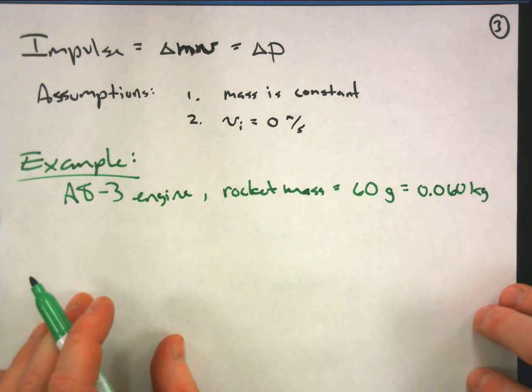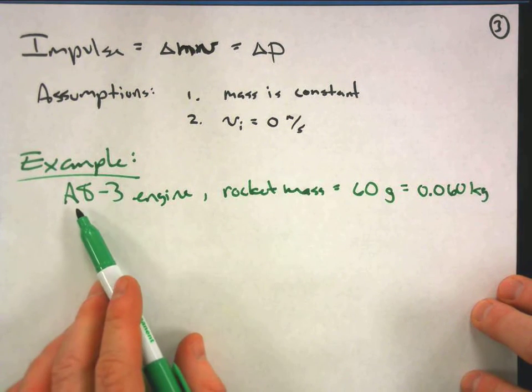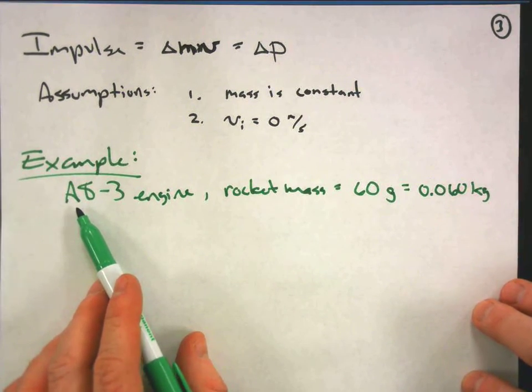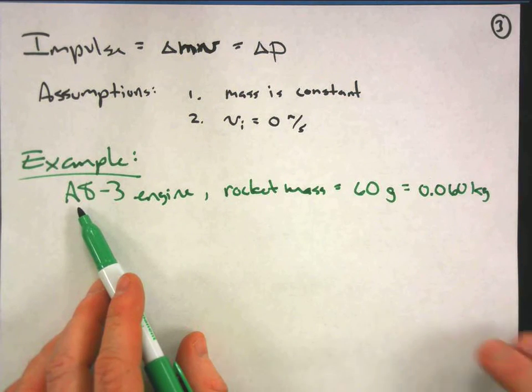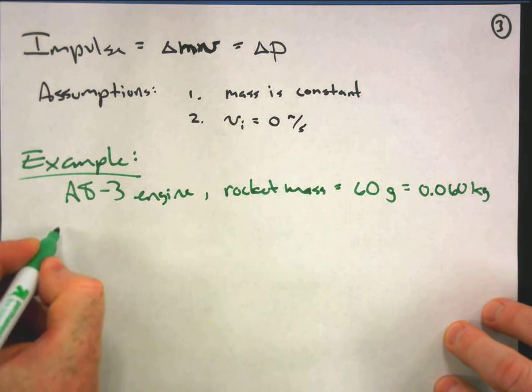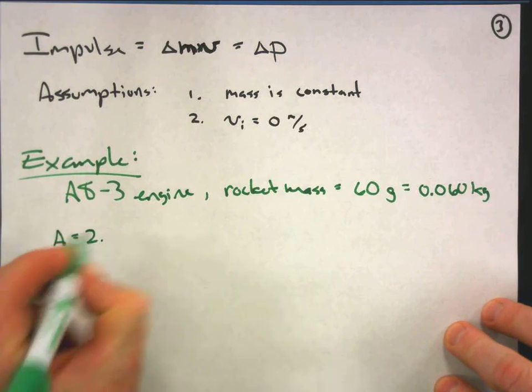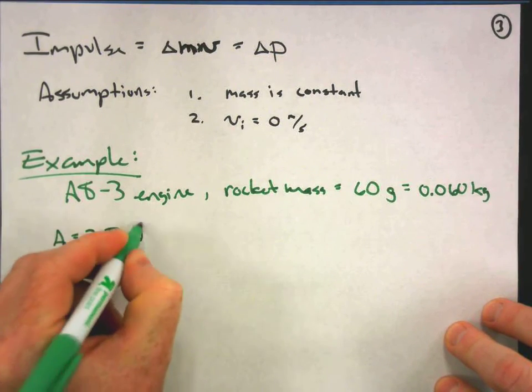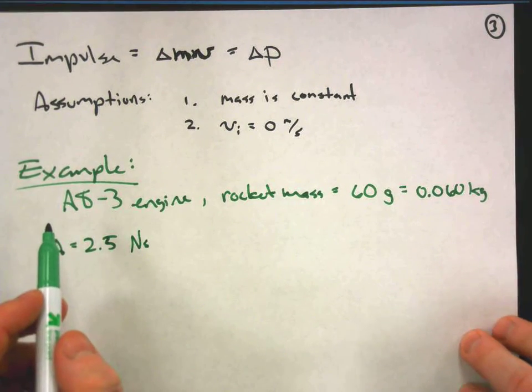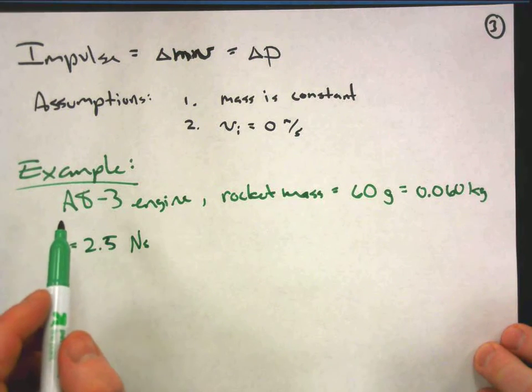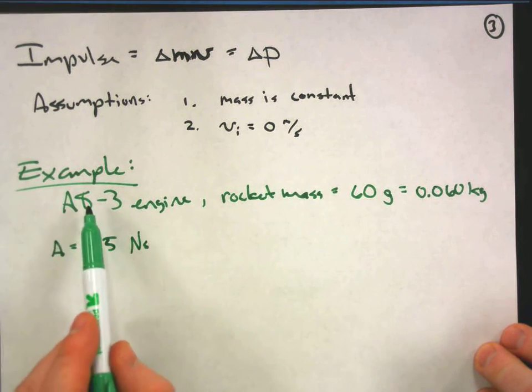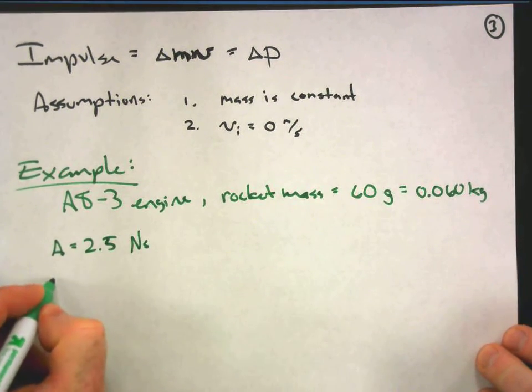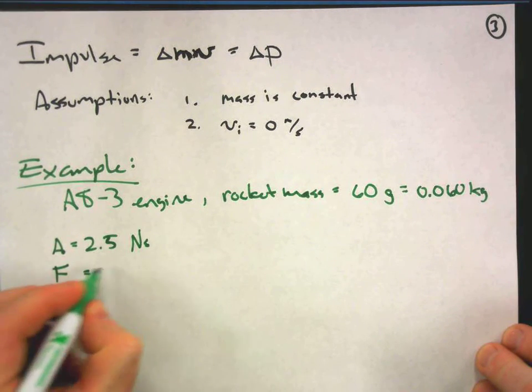So what's going to happen? The engine will supply an impulse based on the letter. Now the letter A typically represents an impulse of around 2.5 newton seconds. We also know that the 8 is the average force, 8 newtons.